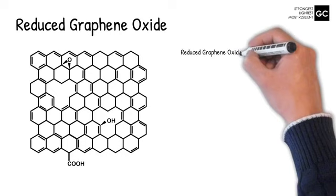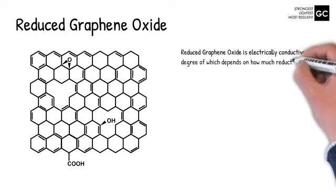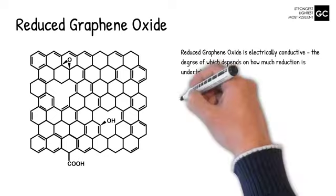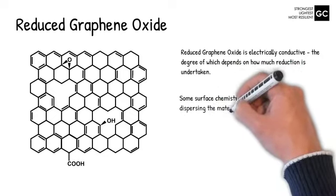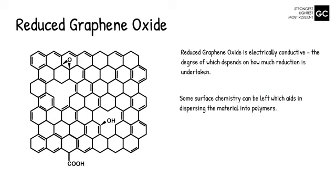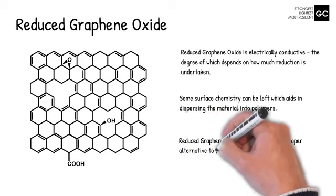Reduced graphene oxide is electrically conductive, the degree of which depends on how much reduction is undertaken. Some surface chemistry can be left, which aids in dispersing the material into solvents and polymers. Reduced graphene oxide can be used as a cheaper alternative to pristine graphene.